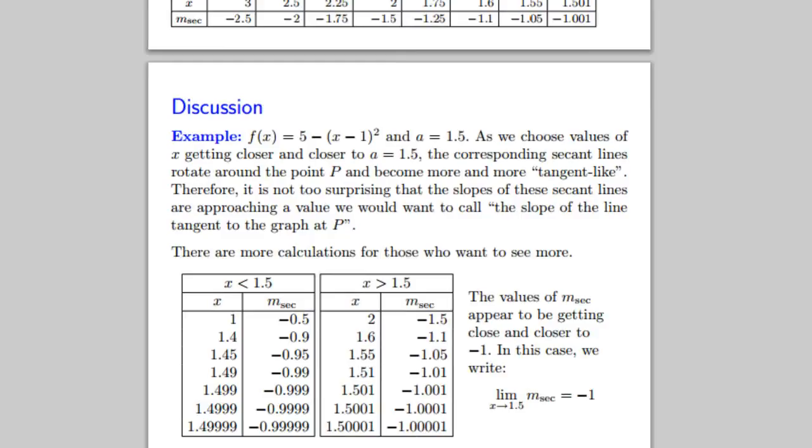So f(x) equals 5 minus (x minus 1) squared, and A equals 1.5. As we choose values of x getting closer and closer to 1.5, the corresponding secant lines rotate around the point P and become more and more tangent-like.